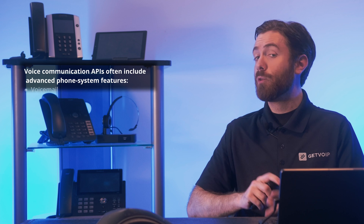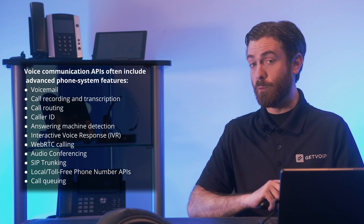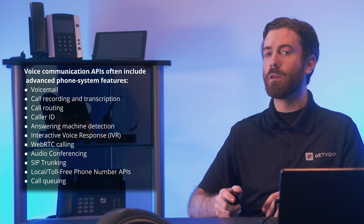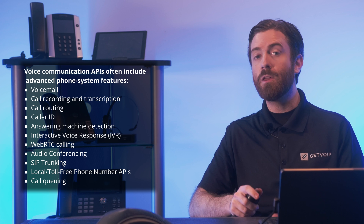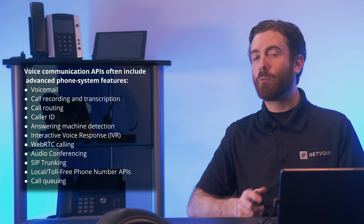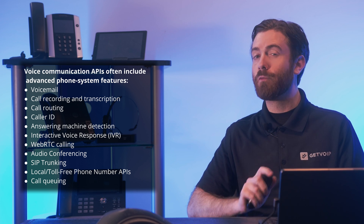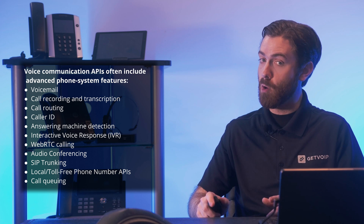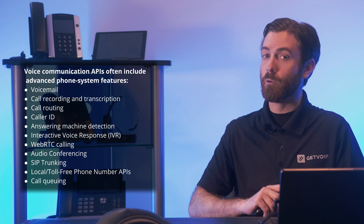Although there are APIs for almost anything you can imagine, there are a few key CPaaS functions every quality provider should offer. Firstly, voice communication APIs. Voice APIs provide VoIP telephony, enabling you to make and receive calls directly within your app. CPaaS providers offer phone numbers like toll-free numbers and local numbers around the country and globe where customers can reach you.